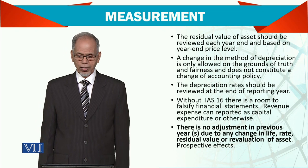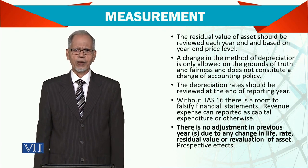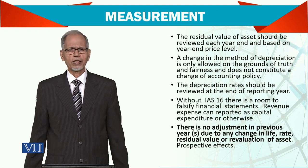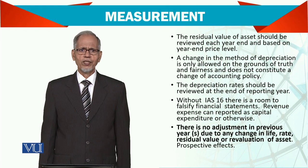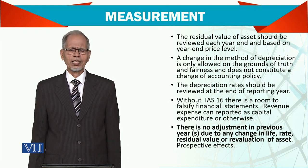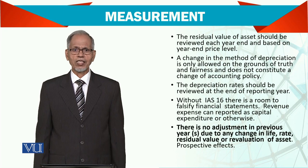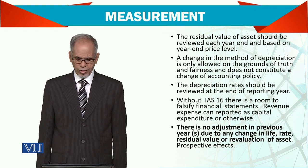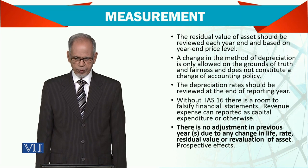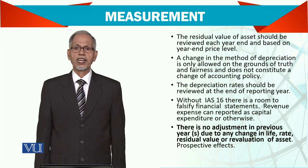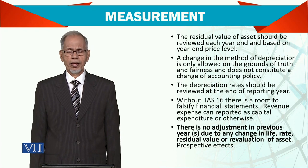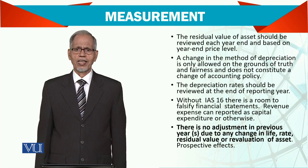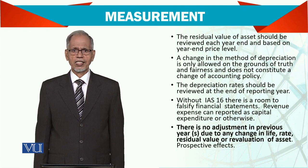Once you have decided on a method — let's say the straight line method — you are not supposed to change it over a number of years. You keep on following the same method, unless you feel that you made a mistake while selecting the method and a change would give a better picture of the company — only then are you allowed to change. The depreciation rate should also be reviewed at the end of each reporting period, whether 20%, 30%, 50%, or whatever the rate is.